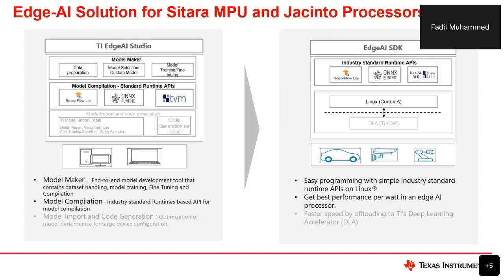Taking a deep dive into the model preparation part: customers come to TI with a particular requirement for their models. Some customers have their models ready and need to choose the right model for their application. In case a customer does not have the right model, TI's Model Maker — the first component on the left — is an end-to-end model development tool which helps customers choose the best model for their use cases. Model Maker is capable of data preparation, model selection, model tuning, and model compilation. In a nutshell, it is a powerful tool to start your development with if you don't have a model in hand.